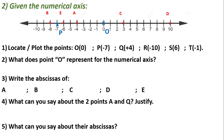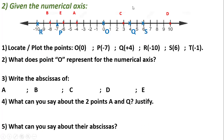Q has abscissa plus 4, located on the positive side. R has abscissa negative 10, located here on negative 10. S has abscissa 6, located on the positive side. T is located on minus 1.